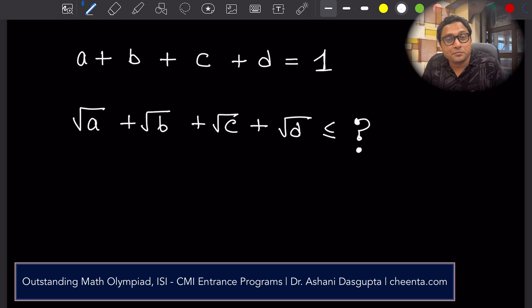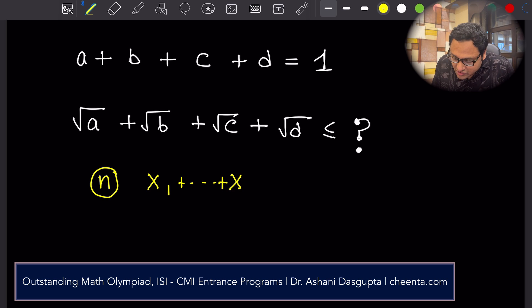Please try it and put it in the comment section. The problem says that there are n numbers x1 up to xn which add up to 1. The sum of the n numbers is 1.